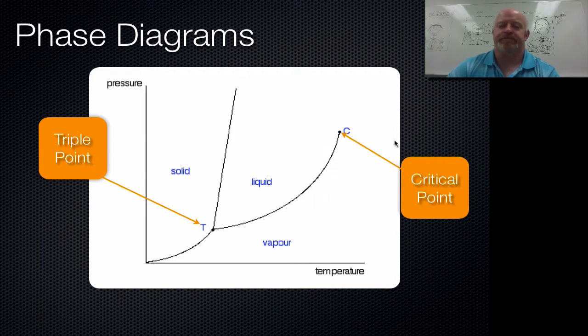Up here is called the critical point, and this is the point at which, anything above here up into this area here, we're going to start talking about plasmas, supercritical fluids, that kind of stuff. So we're going to stay out of this corner, but just so you know that this is kind of a break point where the idea of a liquid and a gas kind of gets a little bit jumbled up in here.